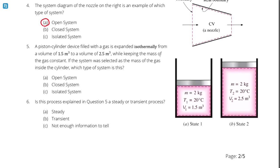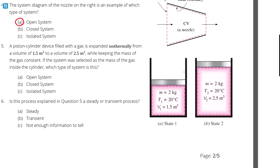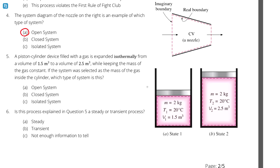Question number five. A piston cylinder device filled with a gas is expanded isothermally from a volume of 1.5 cubic meters to a volume of 2.5 cubic meters while keeping the mass of the gas constant. If the system was selected as the mass of the gas inside the cylinder, which type of system is this? So again, we have the same three options available, open system, closed system, or isolated system. Except in this case, we aren't looking at a fluid passing through our system. We have a gas inside a piston cylinder arrangement, and over the course of the process, this is expanded. But the system was selected as the mass of the gas inside the cylinder, and it's safe to assume that no gas is escaping or entering around the piston head.